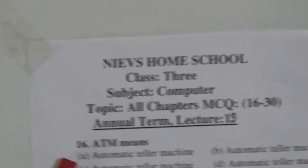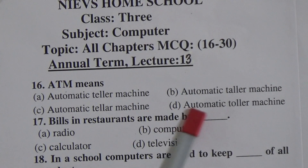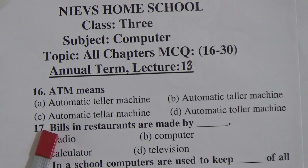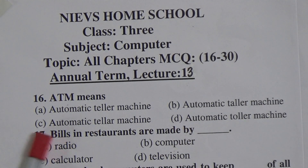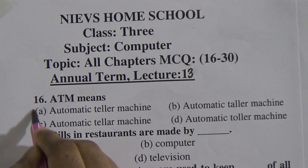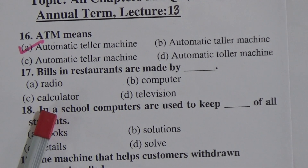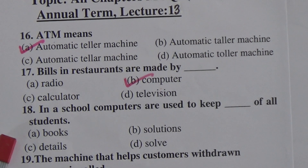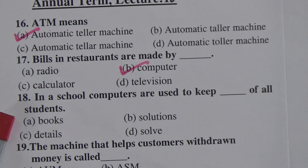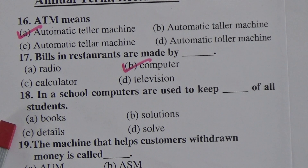Question 16: ATM means Automatic Teller Machine. The answer is Automatic Teller Machine. Question 17: Bills in the restaurants are made by — radio, computer, calculator, or television. The answer will be computer. Question 18: In a school, computers are used to keep dash of all students — books, solutions, details, or solve. The answer will be details.